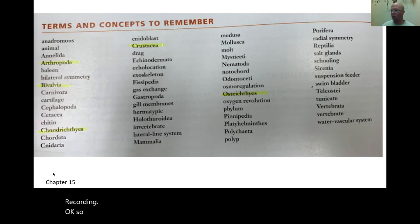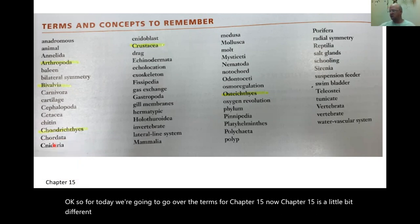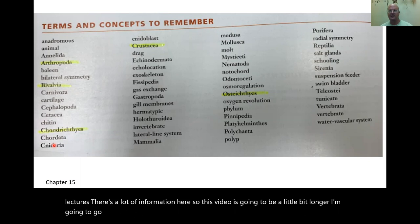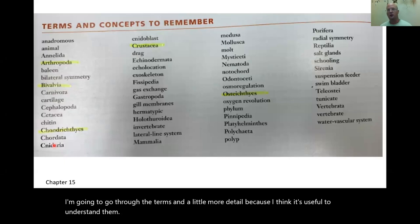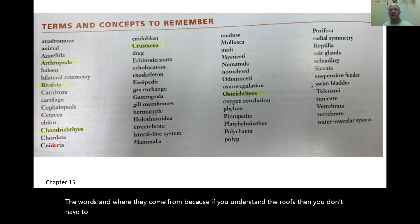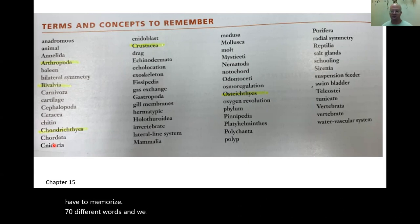For today we're going to go over the terms for chapter 15. Chapter 15 is a little bit different than previous chapters. We're going to talk about it for four lectures, so this video is going to be a little bit longer. I'm going to go through the terms in more detail because if you understand the roots of the words, you don't have to memorize 70 different words — only 15 or 20.